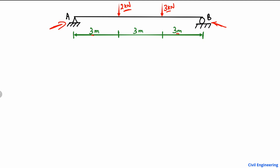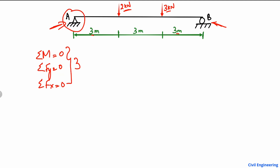To find the support reactions, we use the equilibrium equations: summation of moments at any point equals zero, summation of vertical forces equals zero, and summation of horizontal forces equals zero. Since there is no horizontal load acting on the beam, there is no horizontal reaction. The hinge support can take both vertical and horizontal loads, but since there is no horizontal load, the horizontal reaction Rx equals zero.